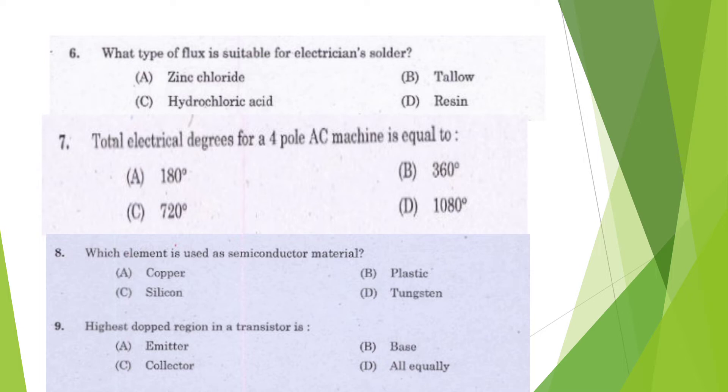Question 6: What type of flux is suitable for electrician solder? Zinc chloride, tallow hydrochloric acid, or resin? Option D, resin.